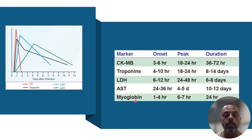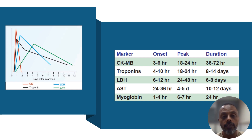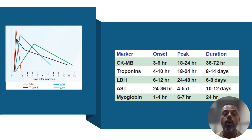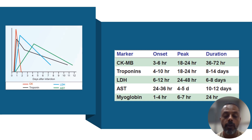For LDH, there are 5 isoenzymes: LDH1, LDH2, LDH3, LDH4, and LDH5. In the normal population, the concentration of LDH2 is more in the blood. But when there is myocardial infarction, the concentration of LDH1 will be more as compared to LDH2, and this reversal in pattern is known as the flipped pattern. This is frequently asked as a multiple choice question as well as a viva question.